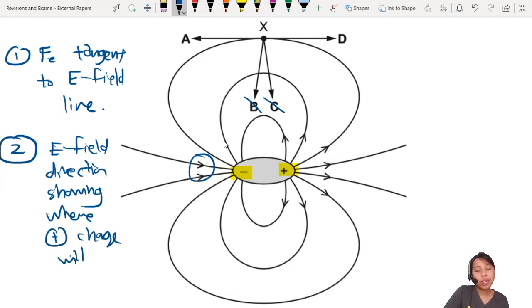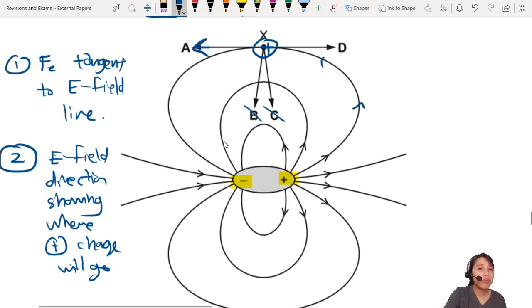It's showing where it will move. So if you have a positive charge right here, then it will follow the direction and the force would be here. But that is for a positive charge.